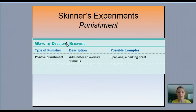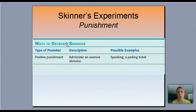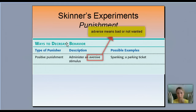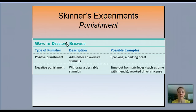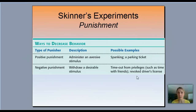Positive punishment means something is added to the situation — like a spanking or a parking ticket. That's added to the situation, so it's a positive punishment. A negative punishment is the opposite: taking something away. I'm withdrawing a desirable experience — like a time out from privileges. You get in trouble and you don't get to go out Saturday night, or your driver's license is revoked. I'm taking something away to decrease the behavior.